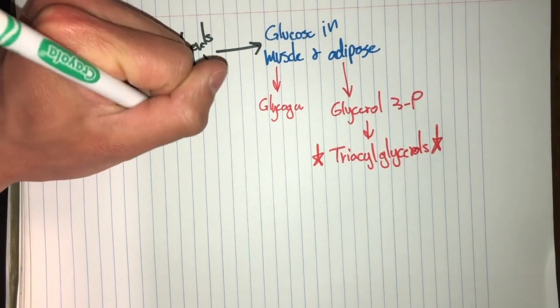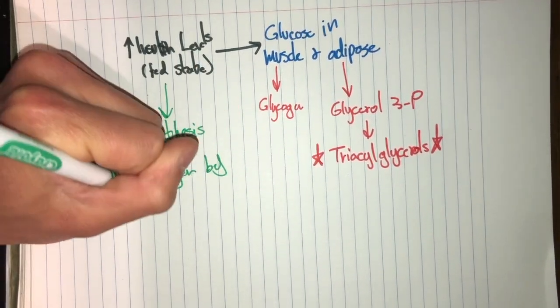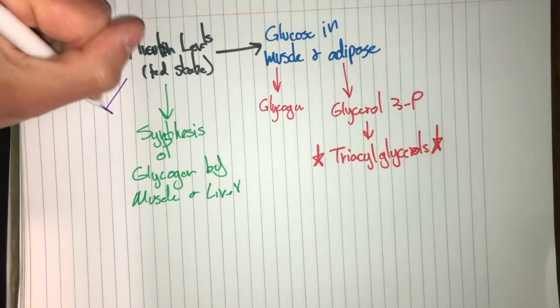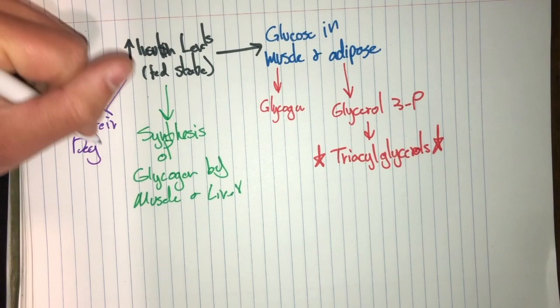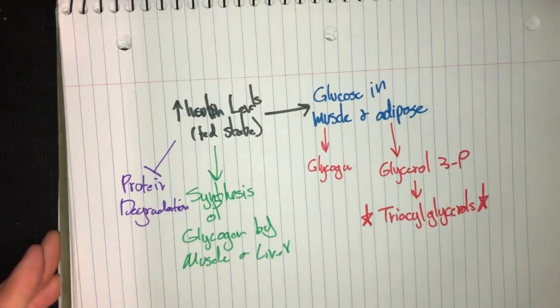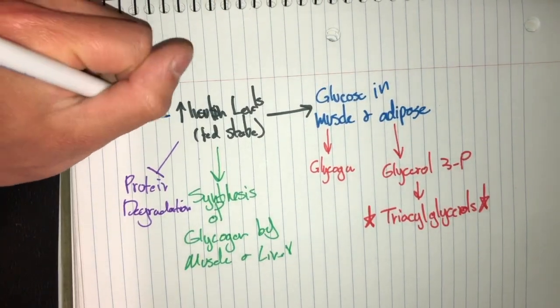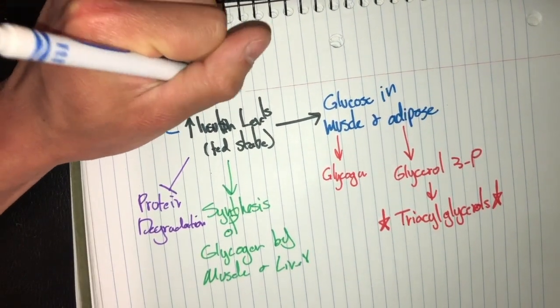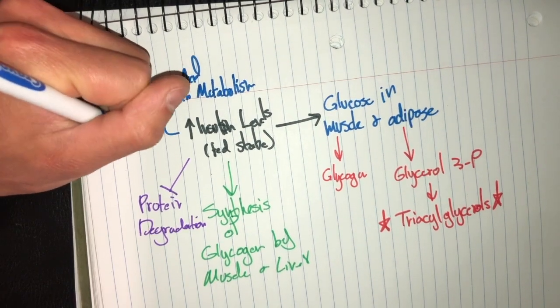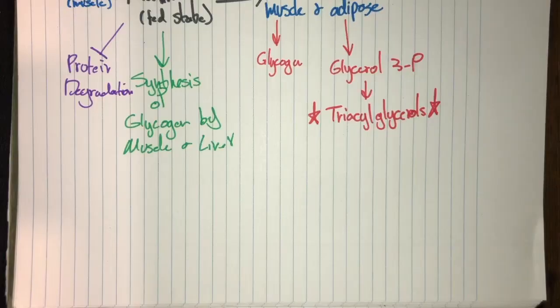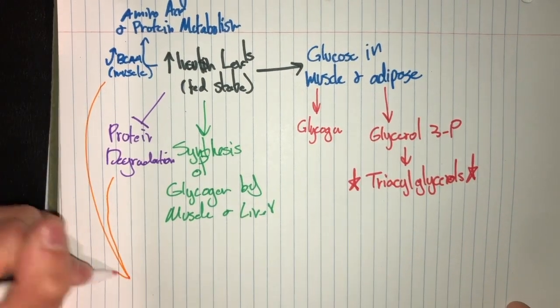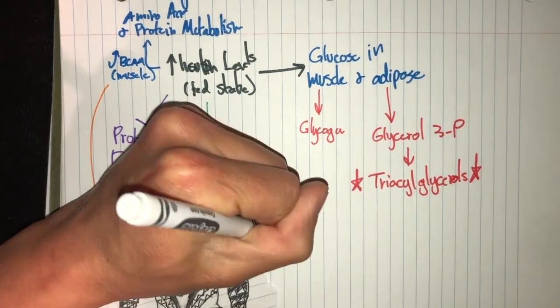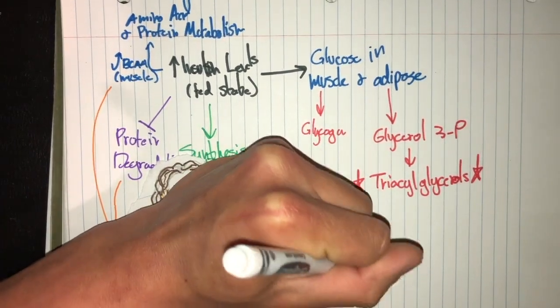Insulin also stimulates the synthesis of glycogen by both the muscle and the liver. It also inhibits protein degradation. Tagging along with that, it stimulates the synthesis of extending amino acids and protein metabolism by promoting the uptake of branched-chain amino acids. This is all done by muscle. So to cut it short, in this case, more insulin can lead to more gains.